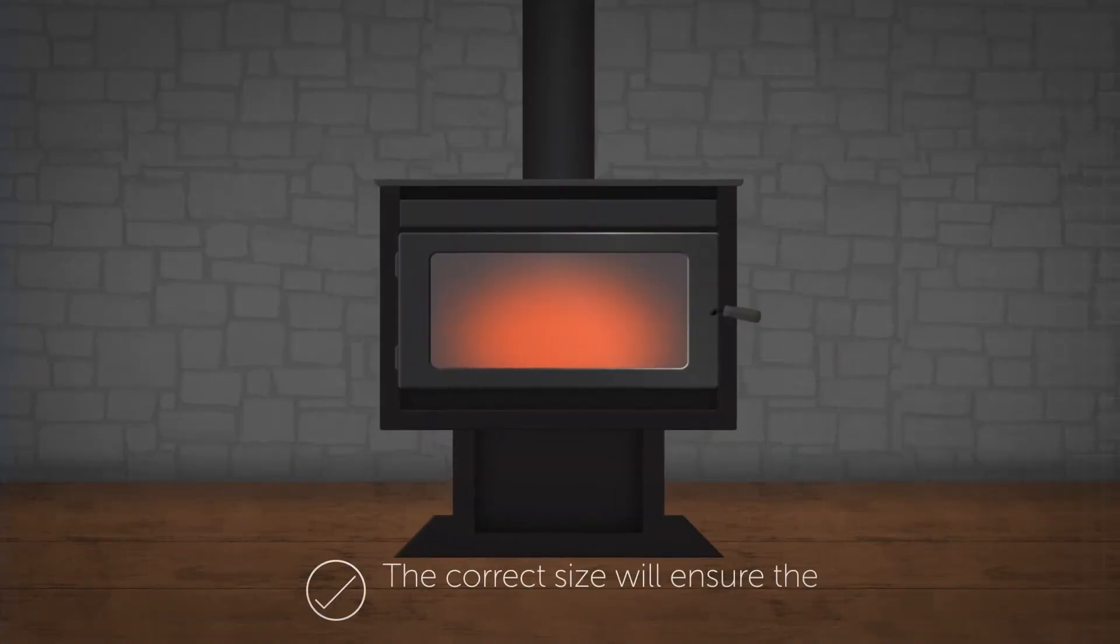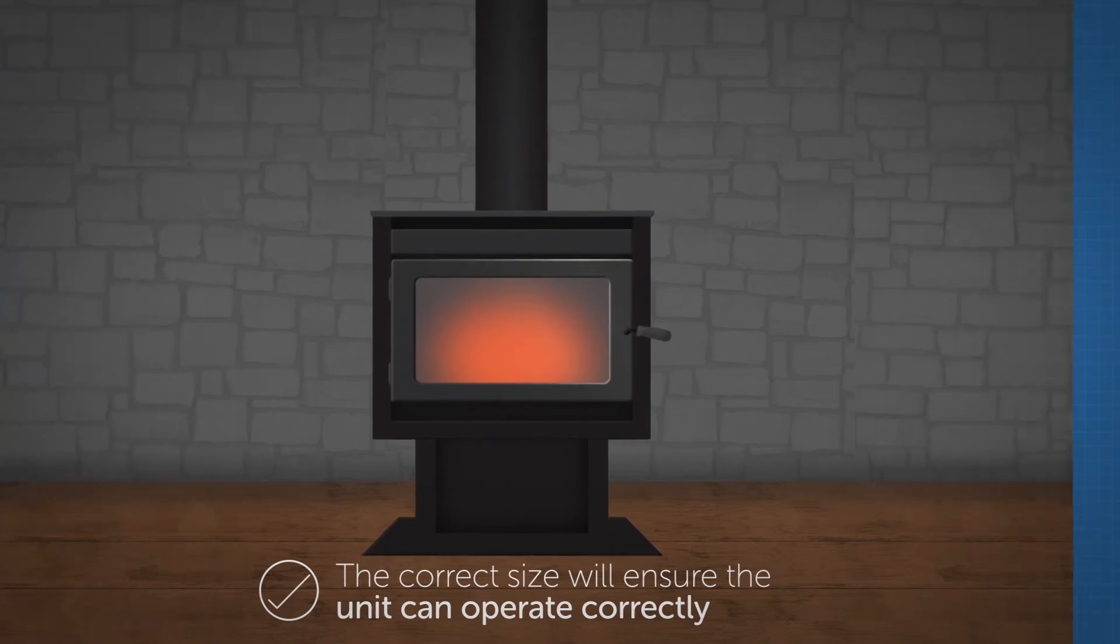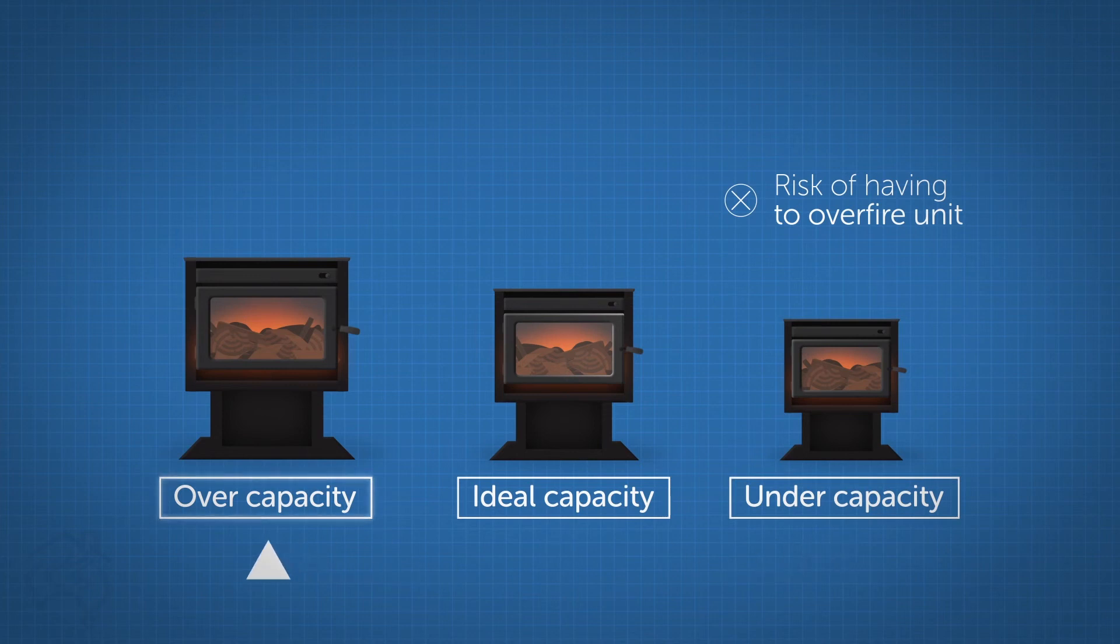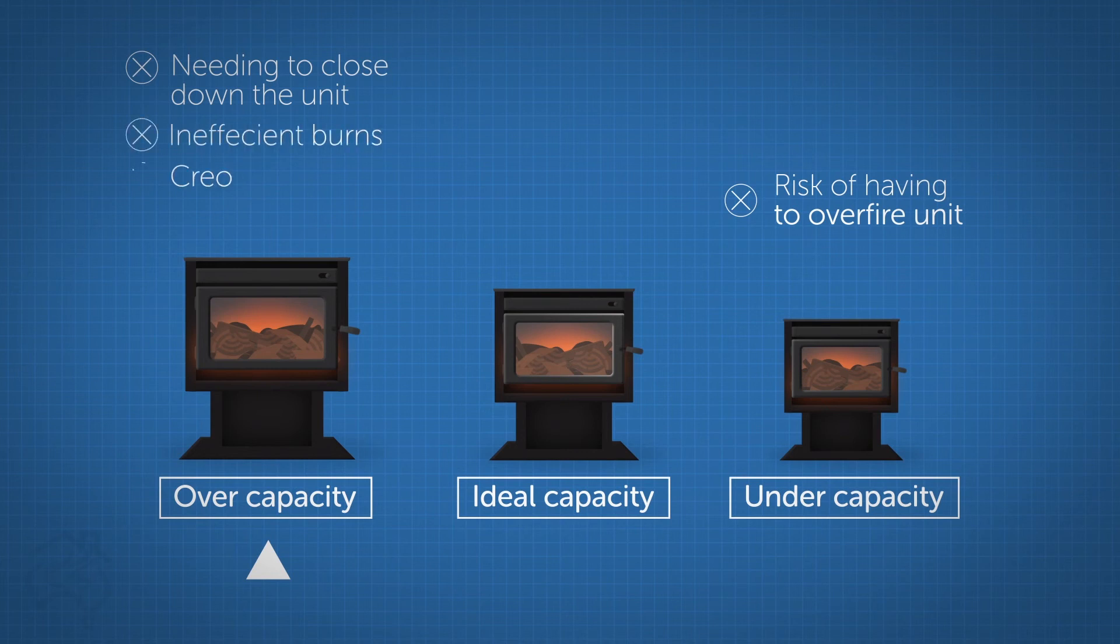Having the correct size unit in your house will ensure the unit can operate correctly. An undercapacity unit means you'll run the risk of having to over-fire the wood heater to have enough heat. Oversizing can lead to the unit needing to be closed down all the time, creating inefficient burns, dangerous creosote build-up in the flue, and excess smoke.